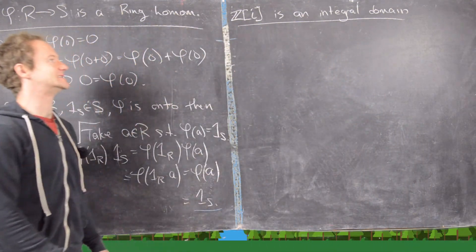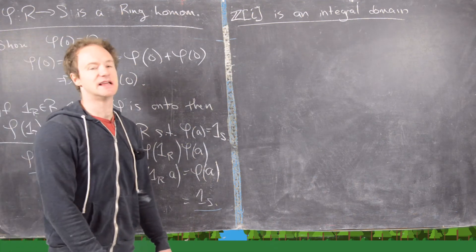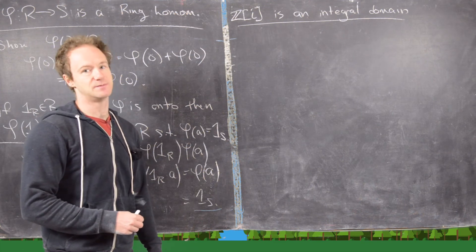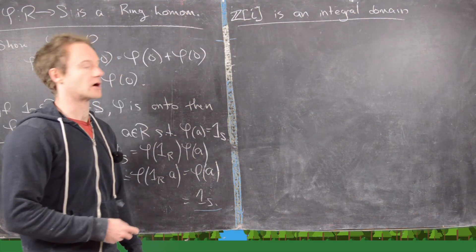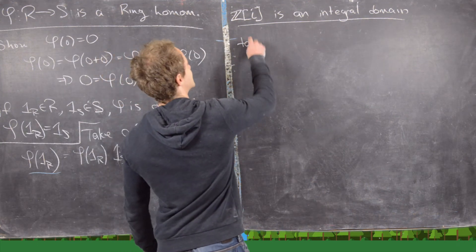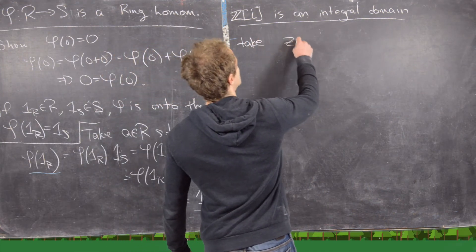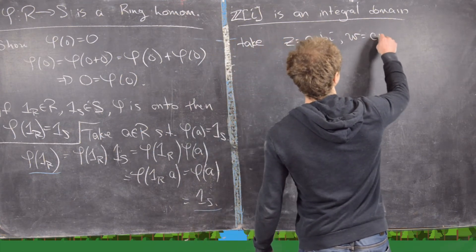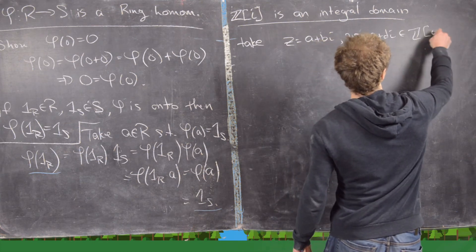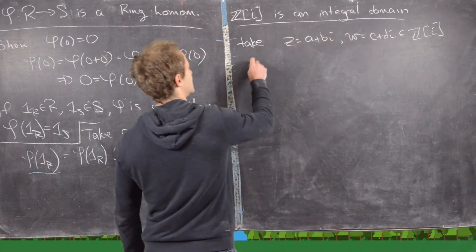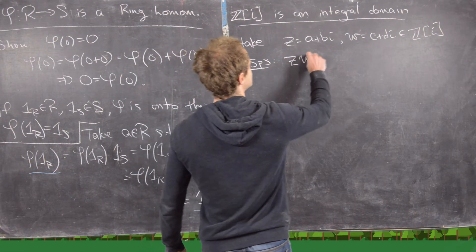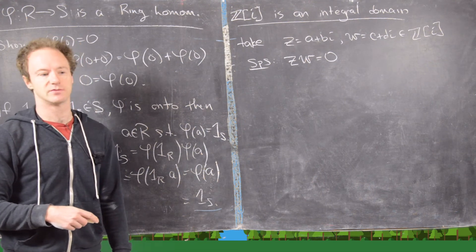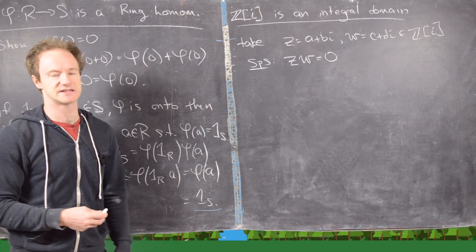For the last example, we want to show that Z adjoined i is an integral domain — these are the Gaussian integers, elements of the form a plus bi where a and b are integers. Let z equal a plus bi and w equal c plus di in Z[i], and suppose that z times w equals 0. We want to show either z equals 0 or w equals 0.